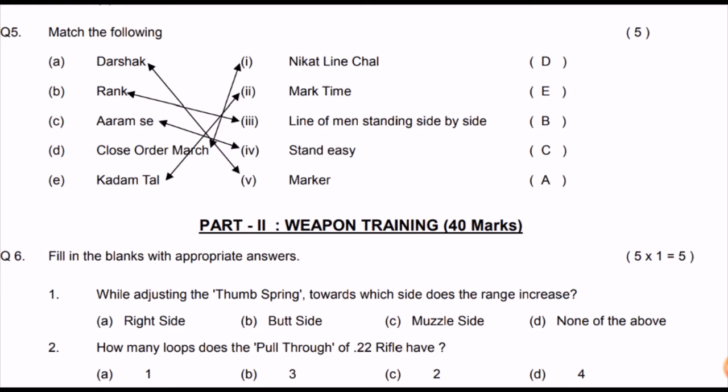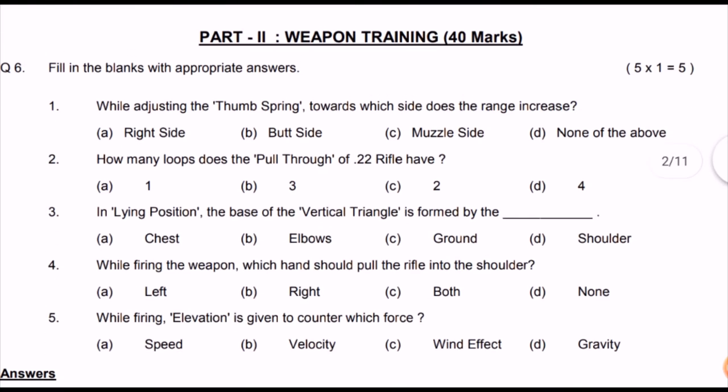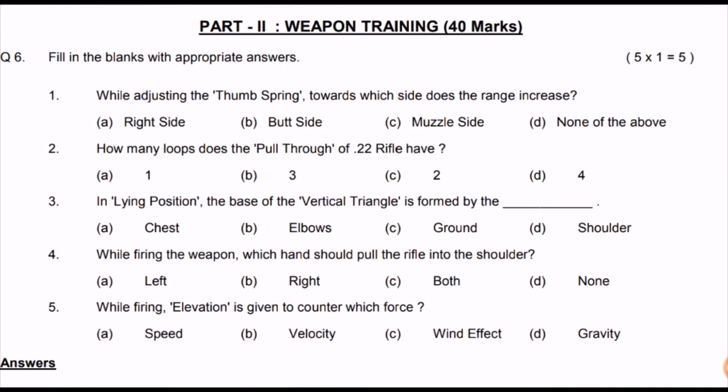Match the following: Darsak — Marker; Rank — a line of men standing side by side; Aram Se — Stand Ease; Vishram — Stand at Ease (don't confuse them); Close Order March — Nikat Line Chal; Kadam Tal — Mark Time.